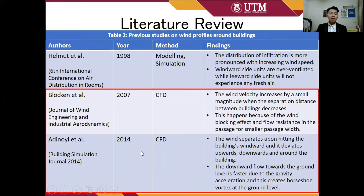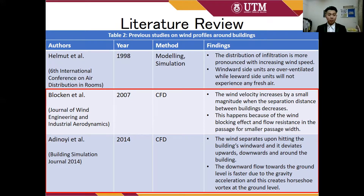These are the previous studies on wind profiles around buildings, with the most significant findings highlighted in the red box. Blocher et al. stated that wind velocity increases by a small magnitude when the separation distance between buildings decreases. The wind velocity only increases by a small magnitude because of the wind blocking effect and flow resistance in the passage for smaller passage widths. Adinoye et al. stated that wind separates upon hitting the building's windward face, deviating upward, downward, and around the building. They also stated that the downward flow towards the ground is faster due to gravity acceleration, creating a horseshoe vortex at ground level.